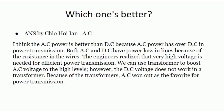Engineers realize that very high voltage is needed for efficient power transmission. We can use a transformer to boost AC voltage to high levels. However, DC voltage does not work with transformers. Because of transformers, AC emerged as the favorite for power transmission.